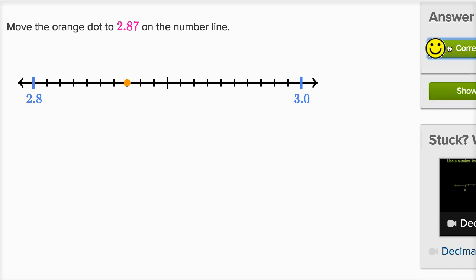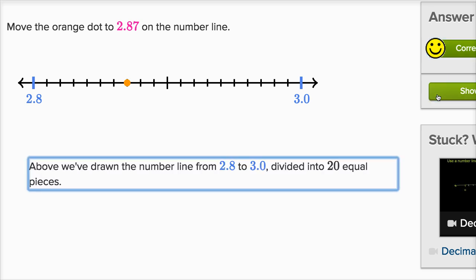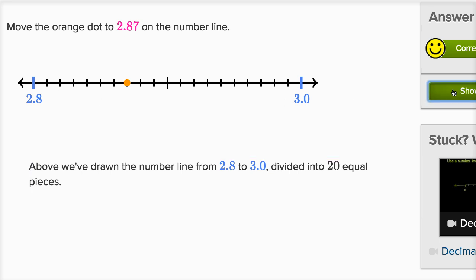We got it right. And you know, after you get a question right, it doesn't hurt to look at the hints at that point. So let's just see how they tackled it. So they say above we've drawn the number line from 2.8 to 3.0, and they divide it into 20 equal pieces. Yep, that looks right.